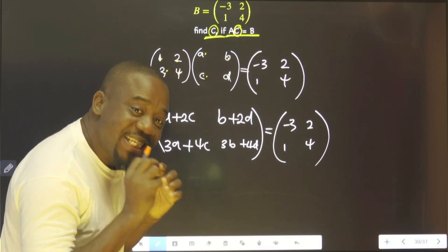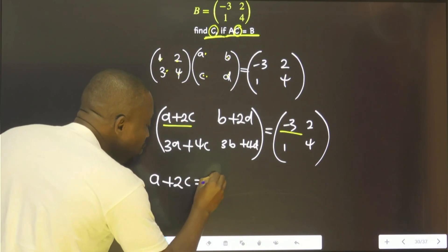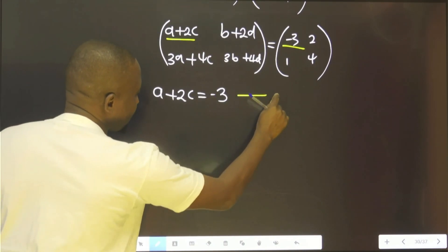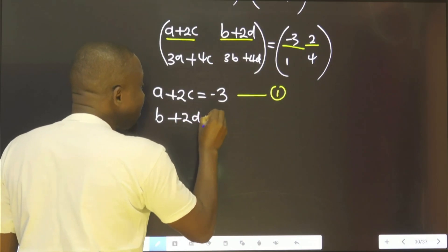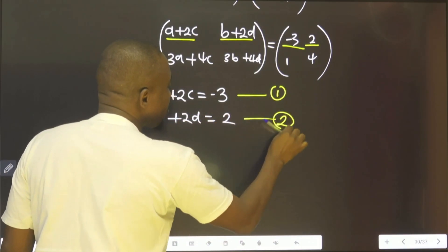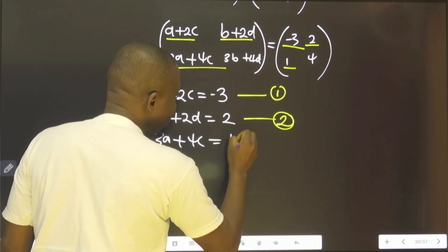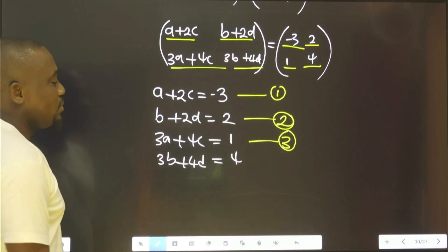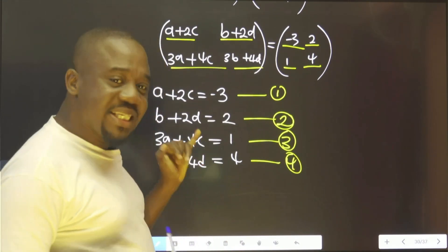So, what is this telling us? This is simply telling us now that: a + 2c = −3 (equation 1); b + 2d = 2; 3a + 4c = 1; and 3b + 4d = 4. Now we can solve for a, b, c, and d.